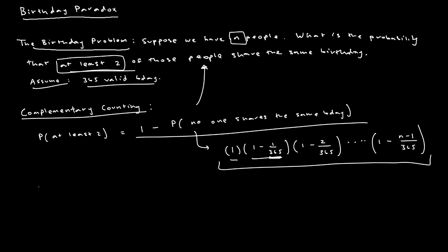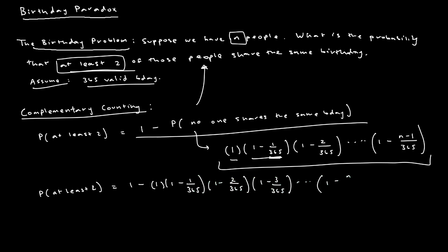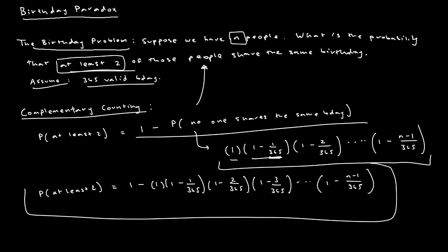To find the probability that at least two people share the same birthday, we subtract this product from one: one minus [one times (one minus one over 365) times (one minus two over 365) times (one minus three over 365) ... times (one minus (n minus 1) over 365)]. This expression solves the birthday problem — given n people, it tells us the probability that at least two share the same birthday.